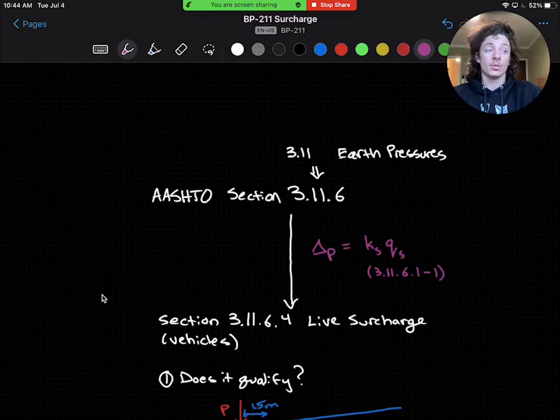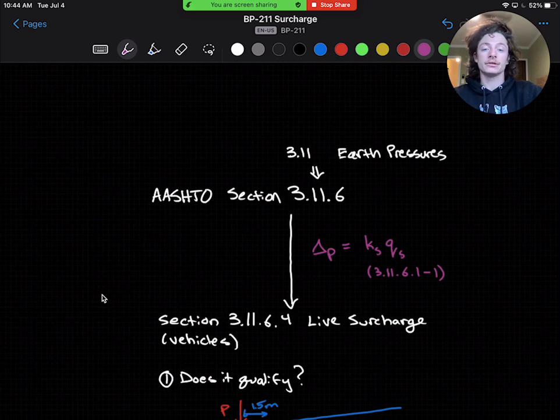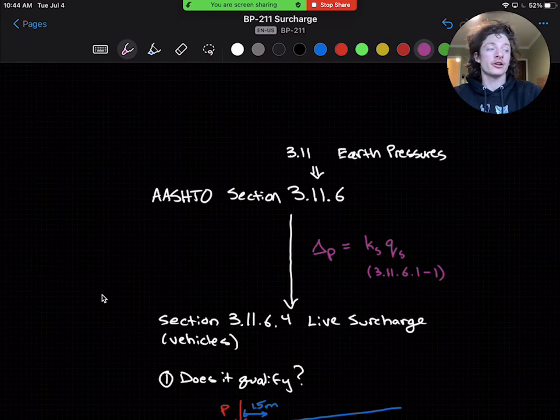Now that we've established what a surcharge load is, we can dive more into the actual loading magnitude from the AASHTO specifications. In AASHTO section 3.11, we find our earth pressure loads, and in section 3.11.6, we will find our surcharge load equation.